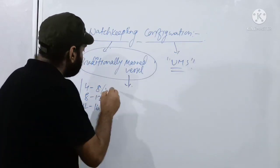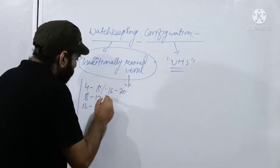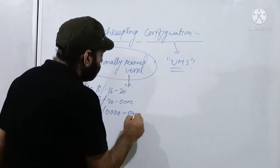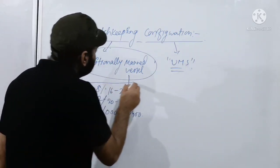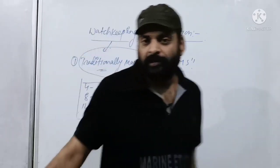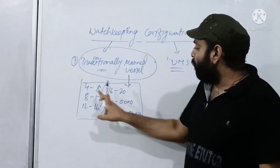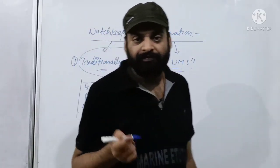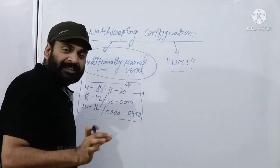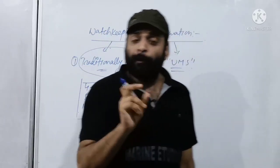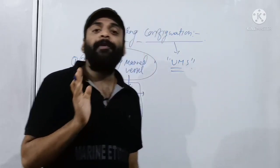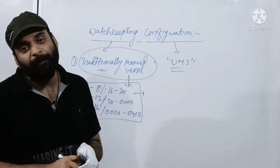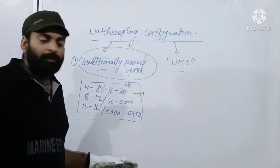Continuing the watch schedule: 16 to 20, 20 to 2200, 0000 to 0200, 0200 to 0400. This is our watchkeeping configuration in traditionally manned vessels. The responsible duty engineer for each watch — mark this word — competent: 'competent' refers to having cleared your COC, meaning at least MEO Class 4 orals. Once you have cleared that, you are a competent engineer. In every watchkeeping configuration — in traditionally manned vessels as well as UMS ships — there must be at least one competent engineer.